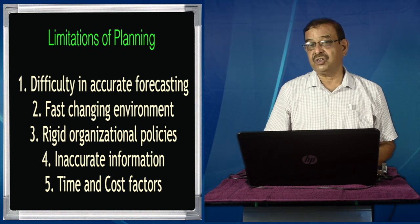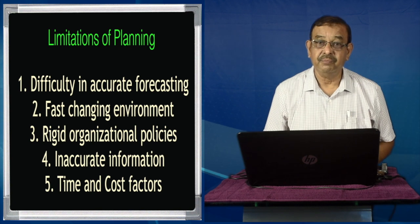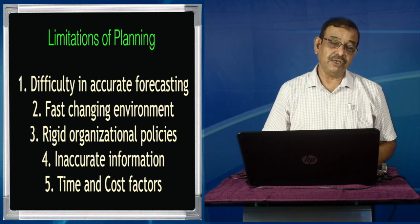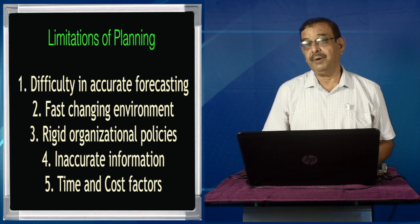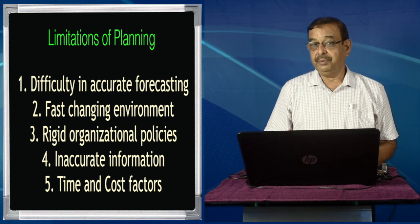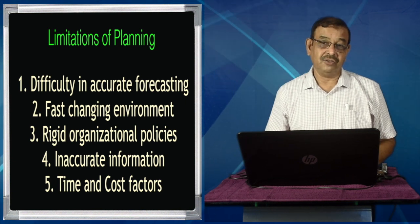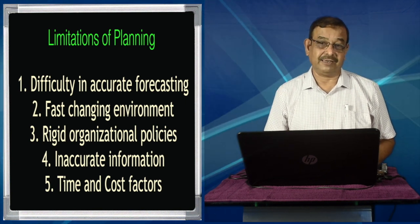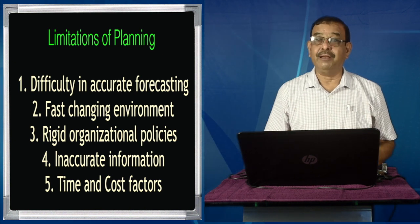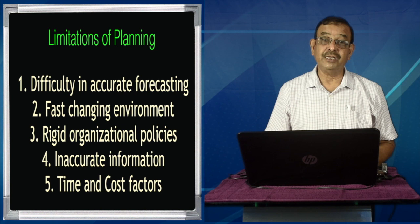The second limitation is fast changing environment. The environment is changing very fast. Though it is not in the unit, there is an acronym called VUCA: V for volatile, U for uncertain, C for complex, A for ambiguous. We are living in a VUCA environment — a volatile environment where we do not know what is going to happen.